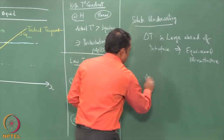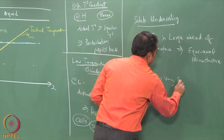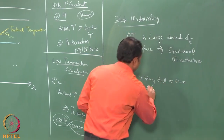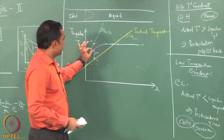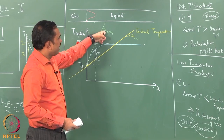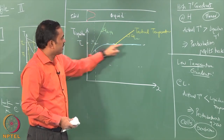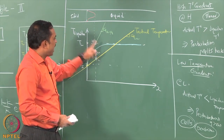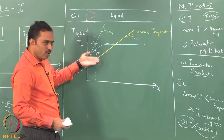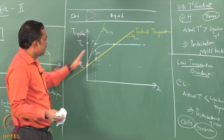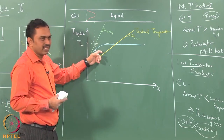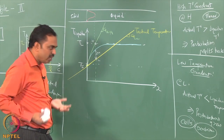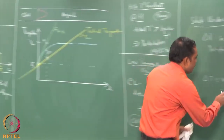If ΔT is very small or zero — meaning the actual temperature is above the liquidus temperature profile, as with a very high temperature gradient — then there is no solute undercooling. In such situations it is impossible to nucleate a grain ahead of the front. That means only the grains belonging to the weldment can grow inside, producing what is called a columnar microstructure.